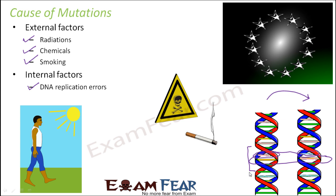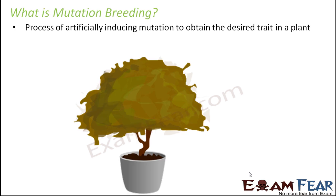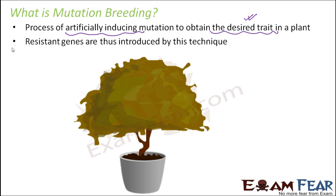When we talk about mutation breeding, creating mutation by internal factors is not possible because that is not under our control. But external factors are under our control. Mutation breeding is the process of artificially inducing mutation to obtain a desired trait in a plant — for example, disease-resistant genes. We can artificially induce mutation with the help of radiations and chemicals to introduce disease-resistant genes and create genetic variations.